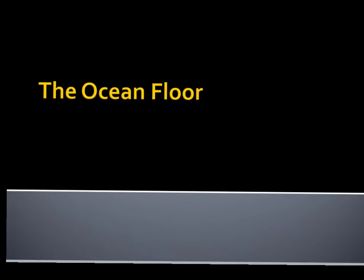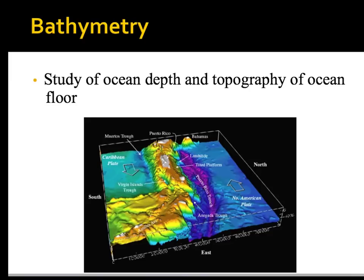Now that we've had a broad look at oceanography, we're going to look a little bit closer at the ocean floor and its features. Bathymetry is the study of ocean depth and topography of the ocean floor. Topography refers to the lay of the land — mountains versus flat areas, hills, dips, valleys, and so on.